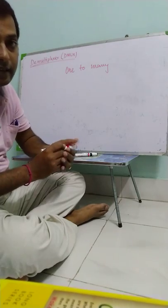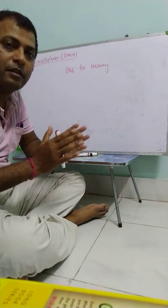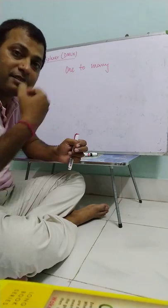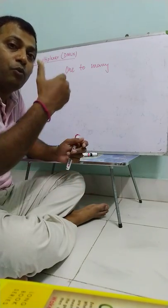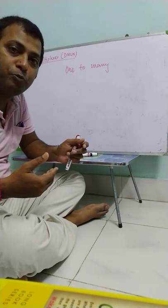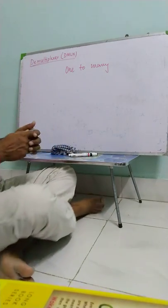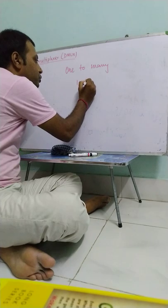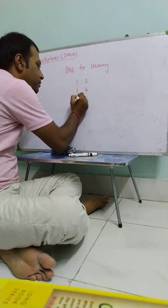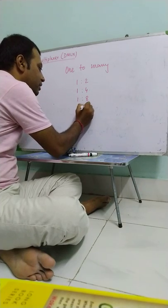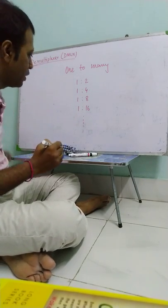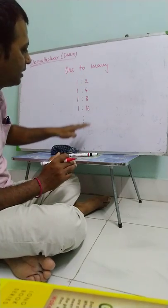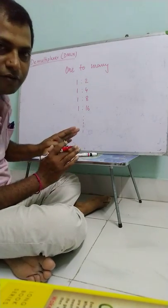So demultiplexing is the process by which input taking from one source is transmitted over one of the many output channels. So we can say like 1 to 2 demultiplexer or 1 to 4 demux, 1 to 8, 1 to 16 and so on. The first column represents number of inputs and the second column represents the number of output channels.